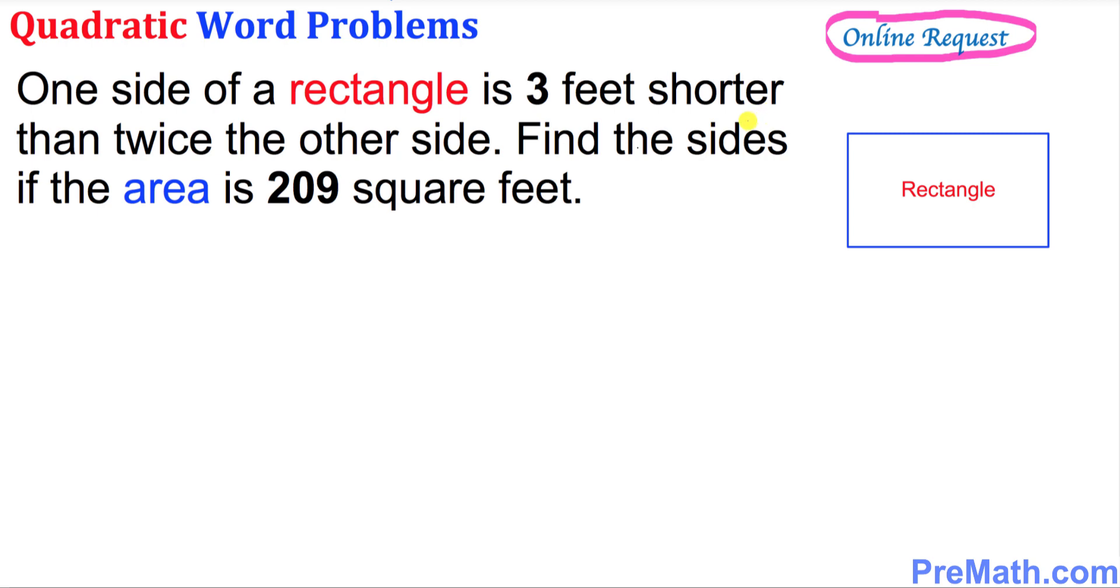Hello again everyone. In this video tutorial we will be solving this given quadratic word problem. One side of a rectangle is three feet shorter than twice the other side. Find the sides if the area is 209 square feet.